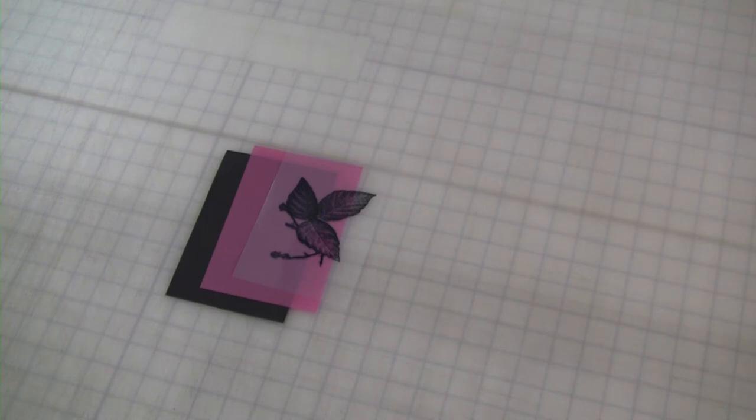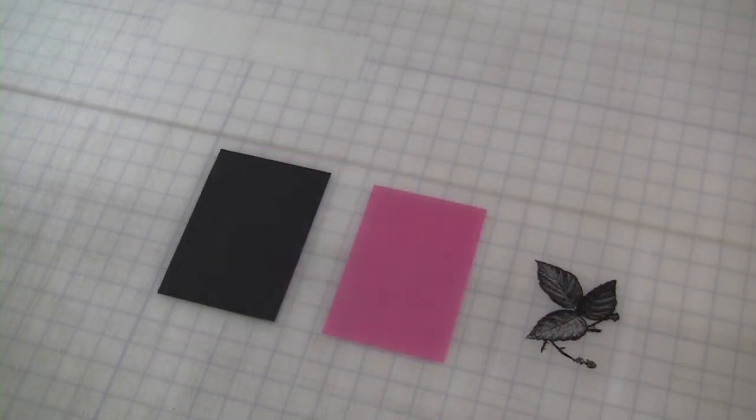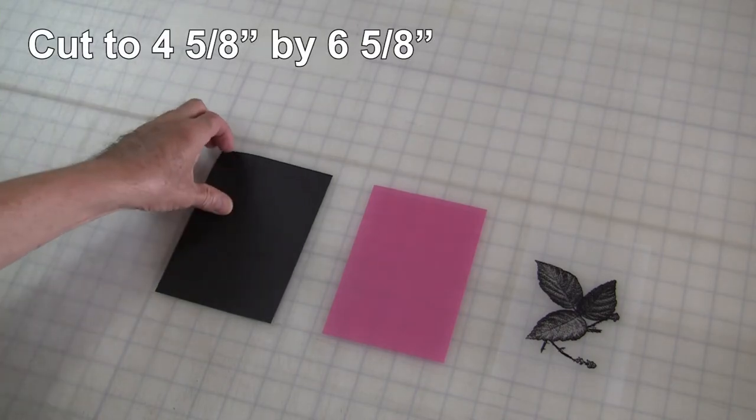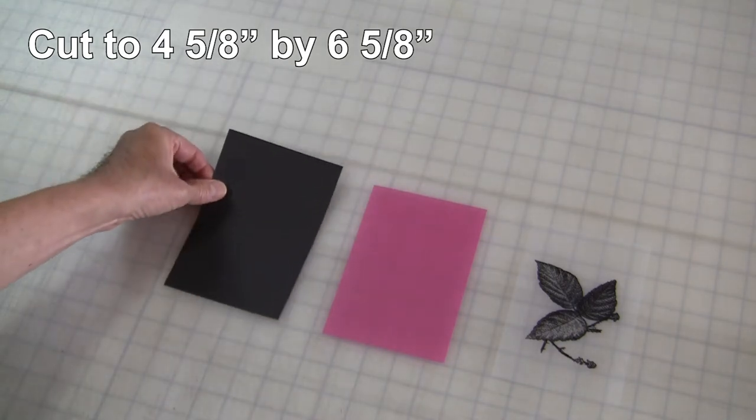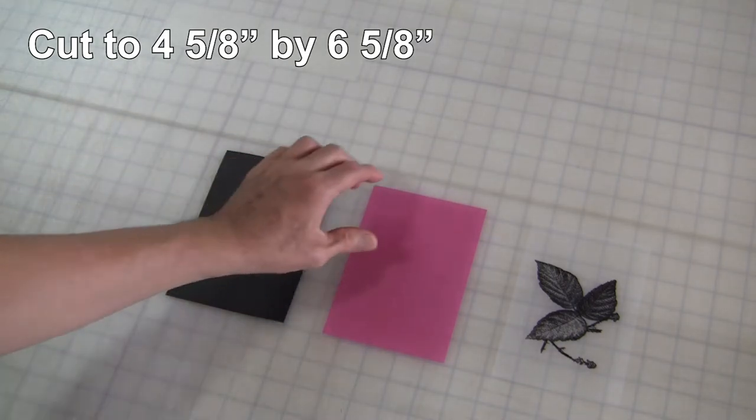In the video, you'll notice I trimmed the transparency, but it's not necessary. Now cut a piece of black construction paper and Stencil Pro to approximately 4 and 5/8 by 6 and 5/8 inches.